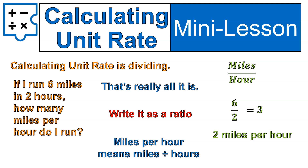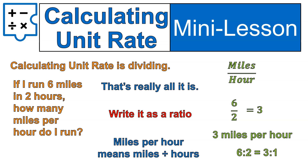So I'm running 3 miles per hour. And we can see that as a ratio: 6 to 2 is equal to 3 to 1. Remember when we simplified ratios? We've basically done the same thing here.